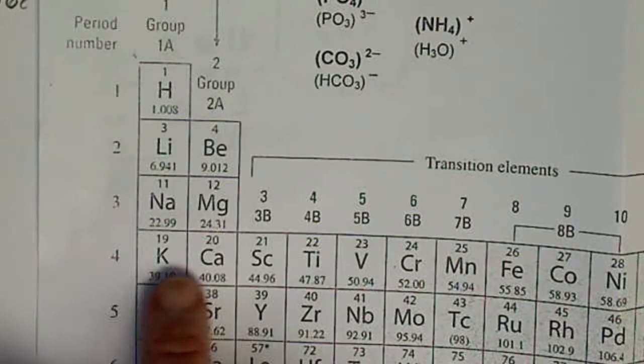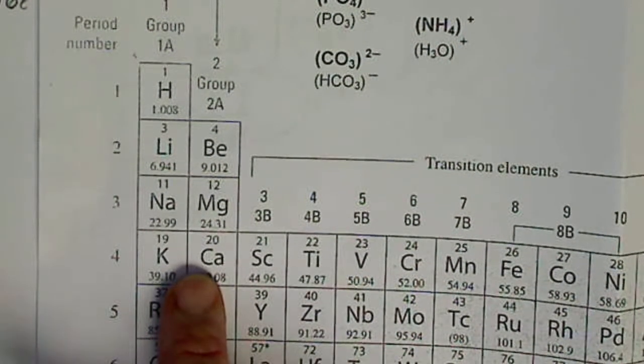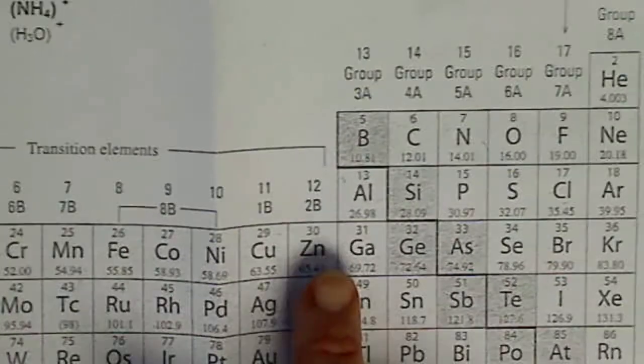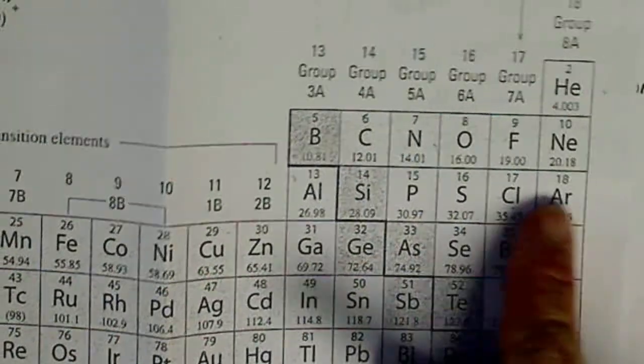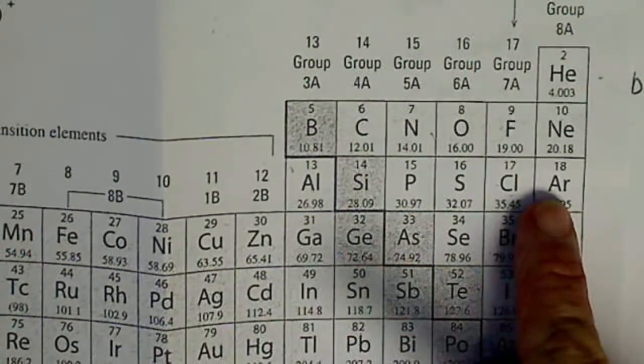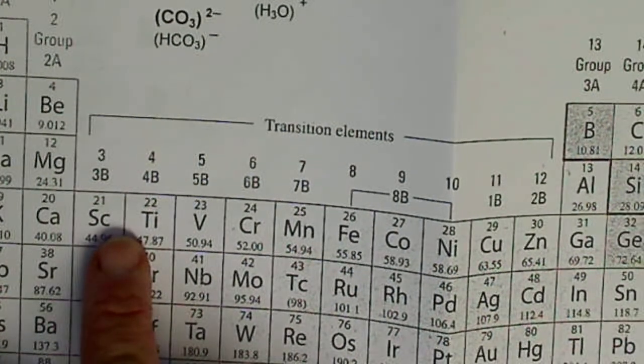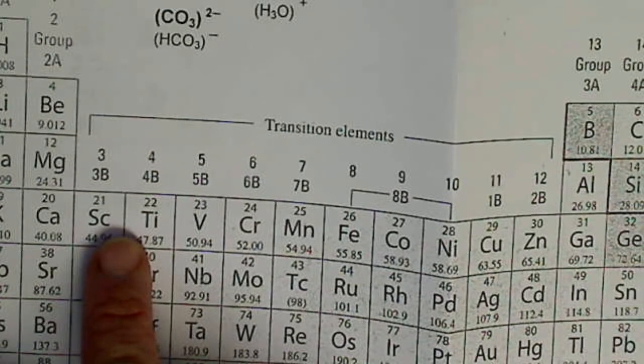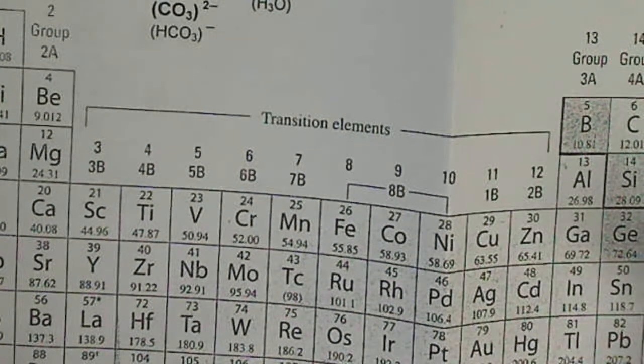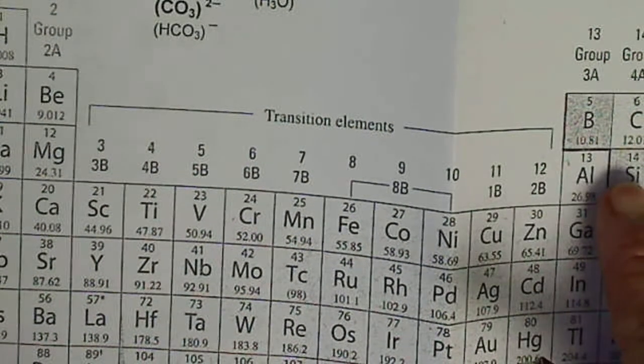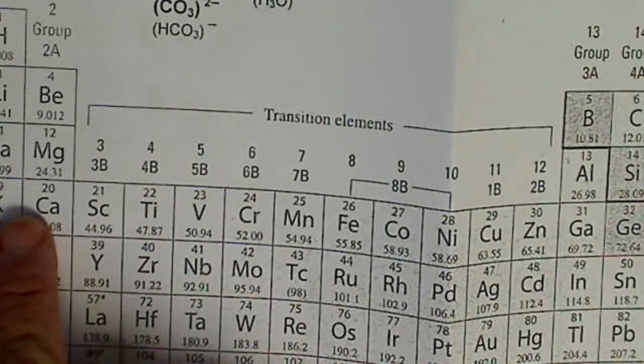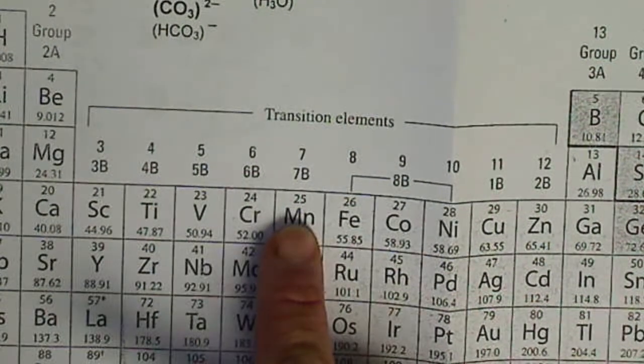We've got to go down to the 4s orbitals. We're going to remember to fill the 3p subshell, then we'll come down to 4s, and then come back and fill the 3d.